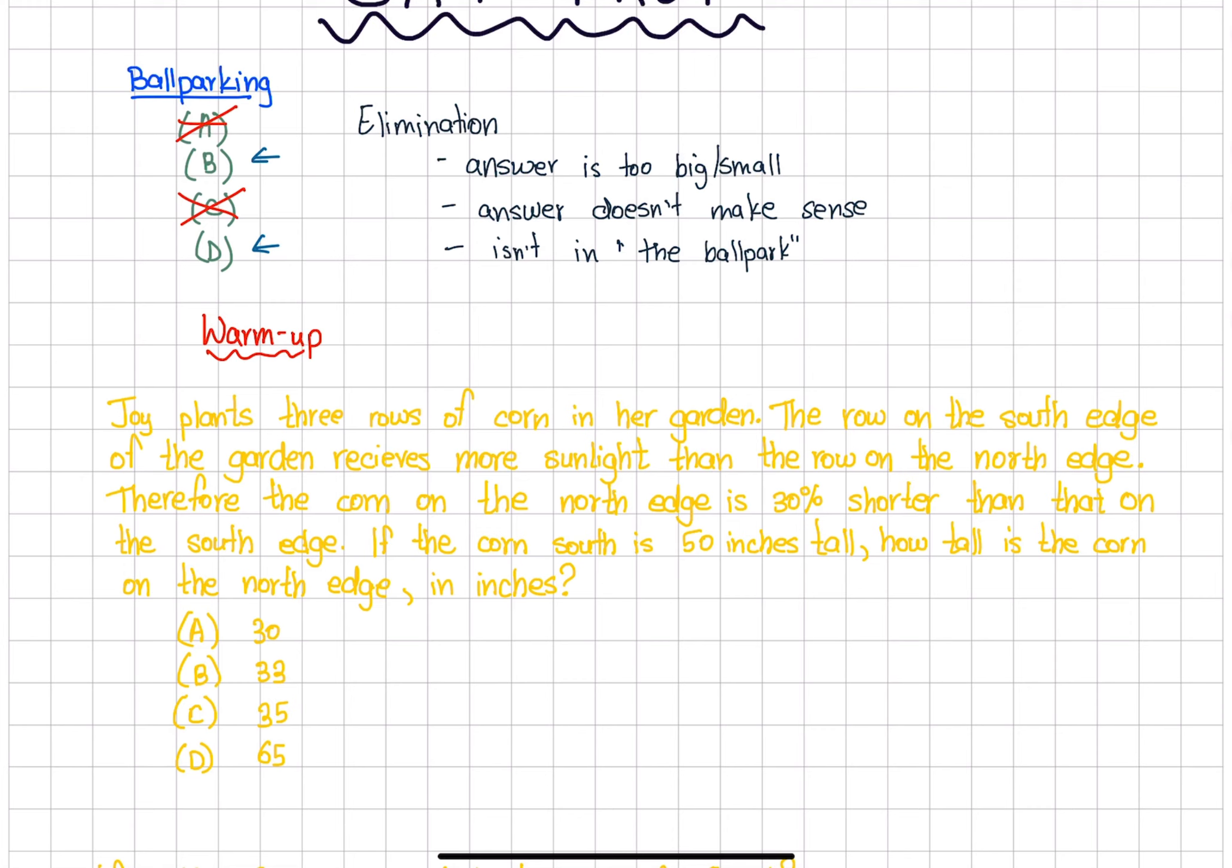Therefore, the corn on the north edge is 30% shorter than that on the south edge. If the corn south is 50 inches tall, how tall is the corn on the north edge in inches? Before we start, let's cross out some information that we don't need and highlight some information that would come in useful.